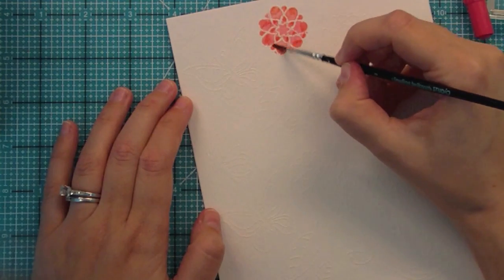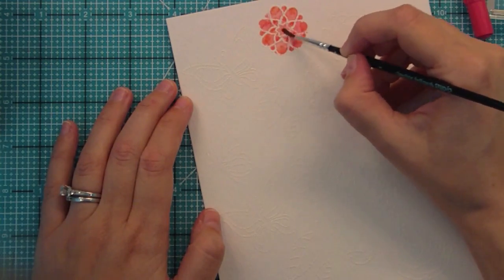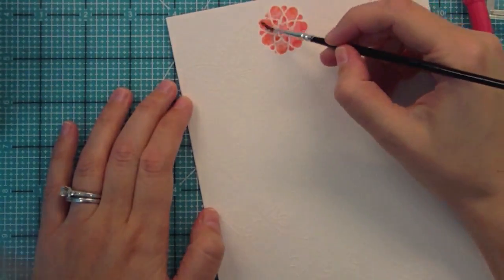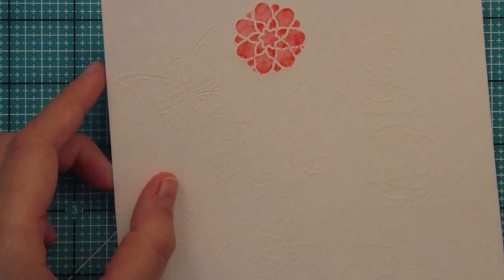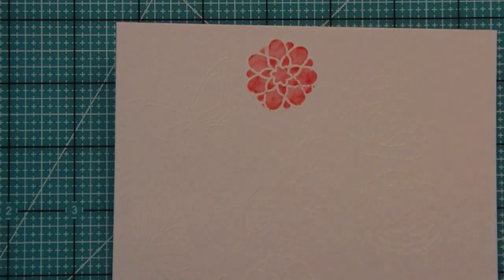I went ahead and started taking the dark color from the petals adding some water and then pulling that color down into the light to kind of blend them together. I like kind of a messy look like this but of course if you wanted something a little bit cleaner you could blend it more but I like this kind of imperfect look to it.